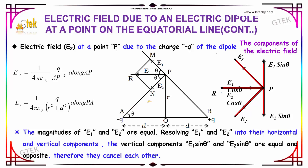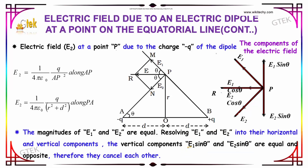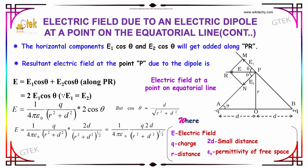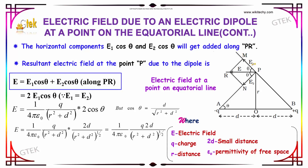We now know E1 and E2. The magnitudes of E1 and E2 are equal. Resolving into horizontal and vertical components, the vertical components E1 sin θ and E2 sin θ are equal and opposite, so they cancel. The horizontal components E1 cos θ and E2 cos θ add along PR. The resultant electric field at point P is E equal to E1 cos θ plus E2 cos θ, along PR.